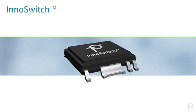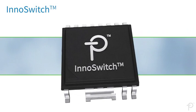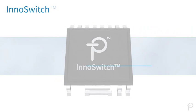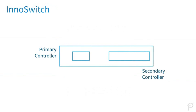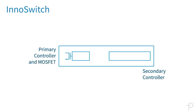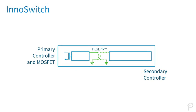InnoSwitch ICs are revolutionary switch mode power conversion devices for isolated flyback power supplies. In a single package they combine primary and secondary controllers with a power MOSFET and a unique safety rated feedback mechanism called FluxLink.